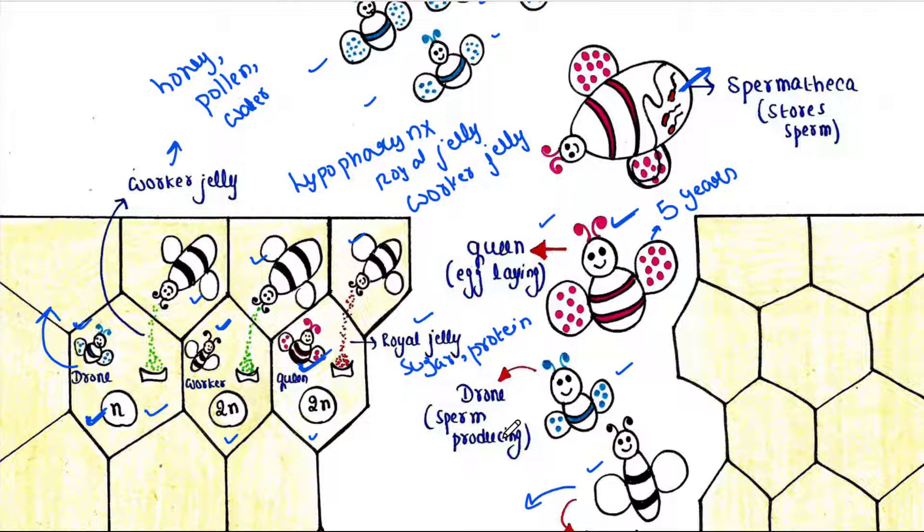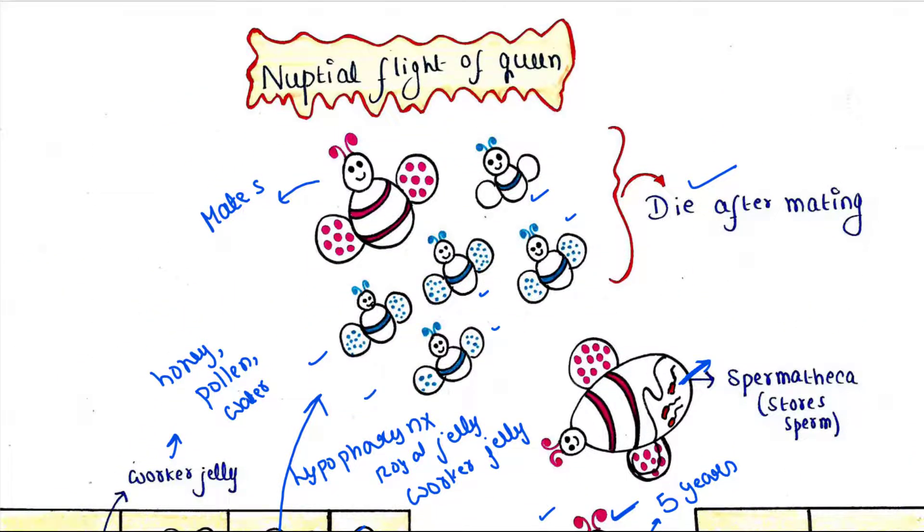At that time, worker honeybees raise a new queen. As the new queen becomes a young adult, she attends a nuptial flight and initiates a new cycle.